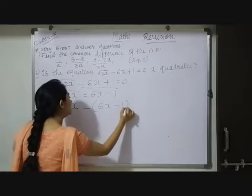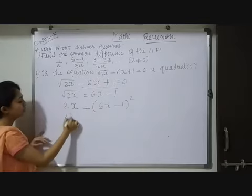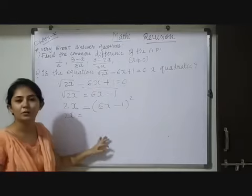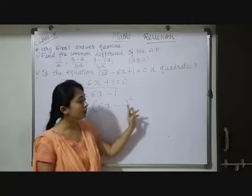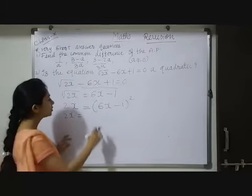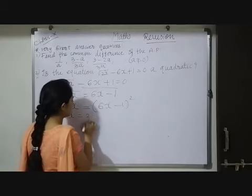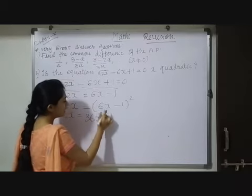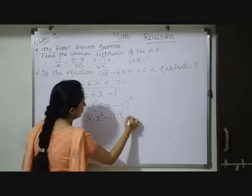And here 6X minus 1 whole square. So 2X equals, children, here if you observe it is A minus B whole square identity, that is A square minus 2AB plus B square. So A square, that is 6X square which is 36X square, minus 12X plus 1.